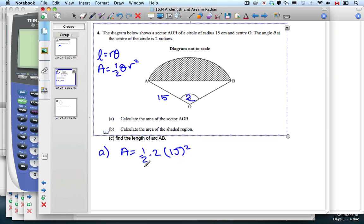Make sure your calculator is in radian mode. So I can cancel out those. 15 squared is 225. The unit for this is centimeters squared.